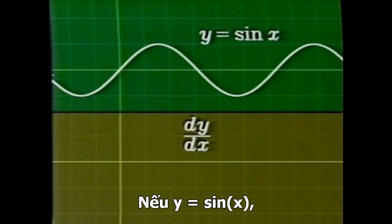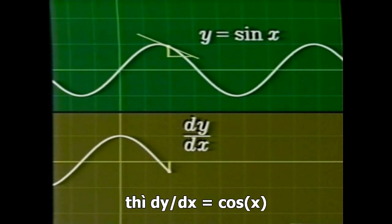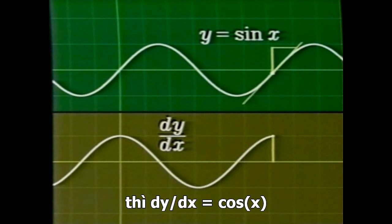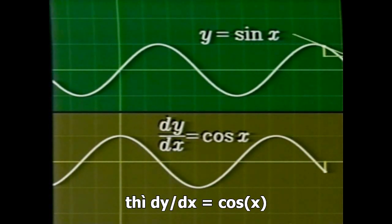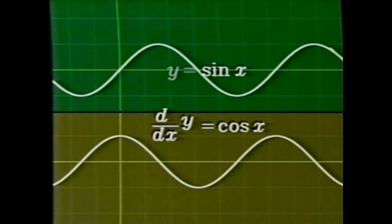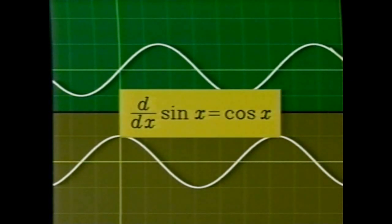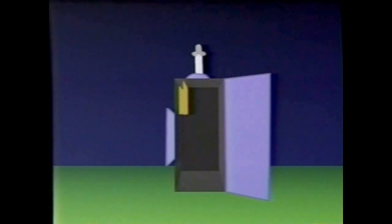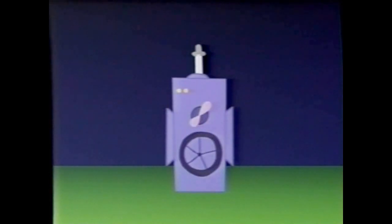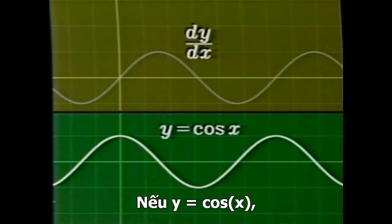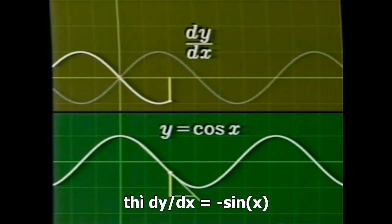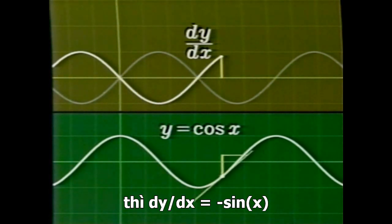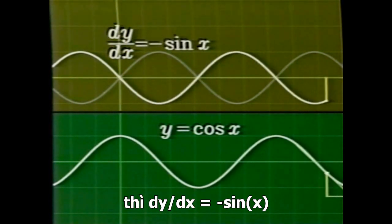If y equals sine x, then dy over dx equals cosine x. If y equals cosine x, then dy over dx equals minus sine x.